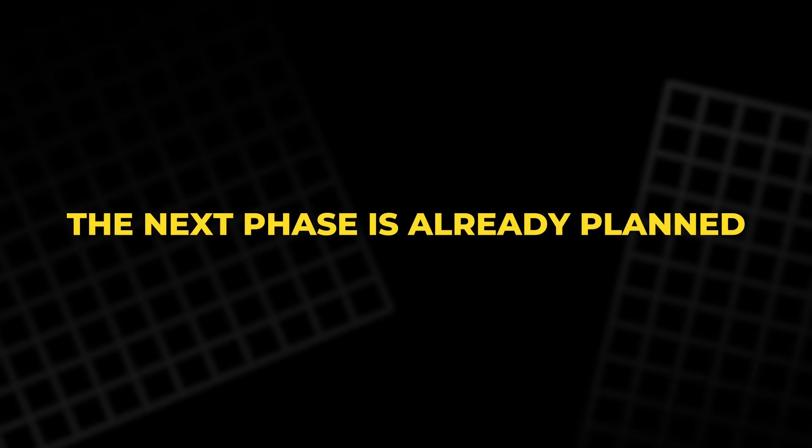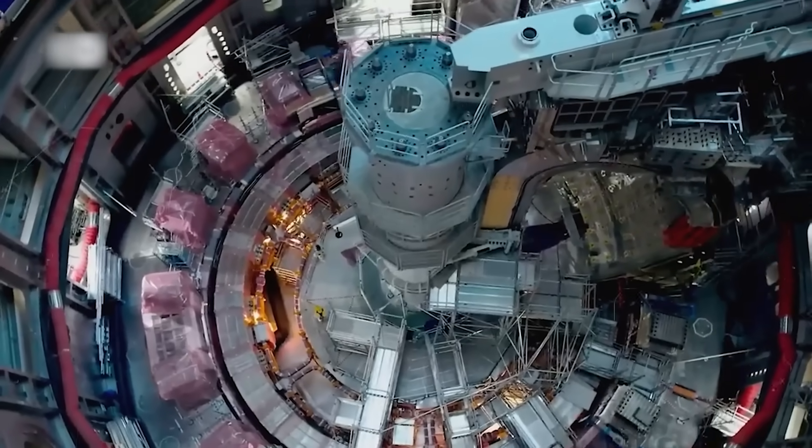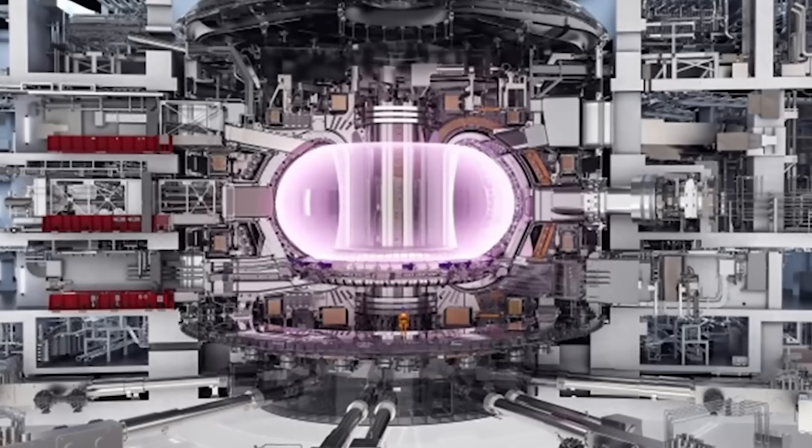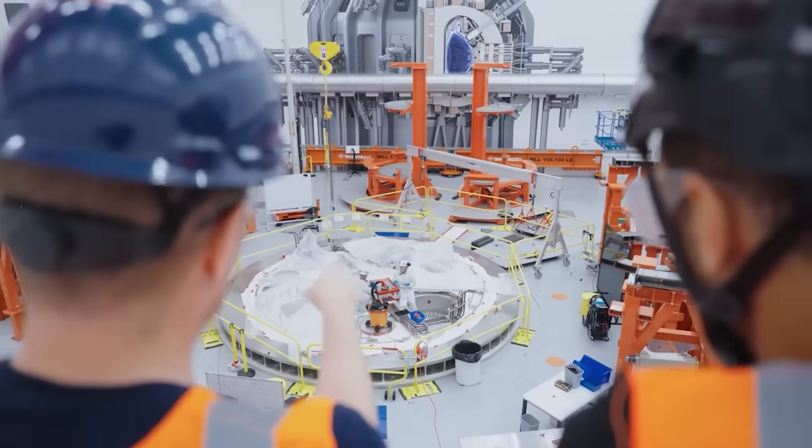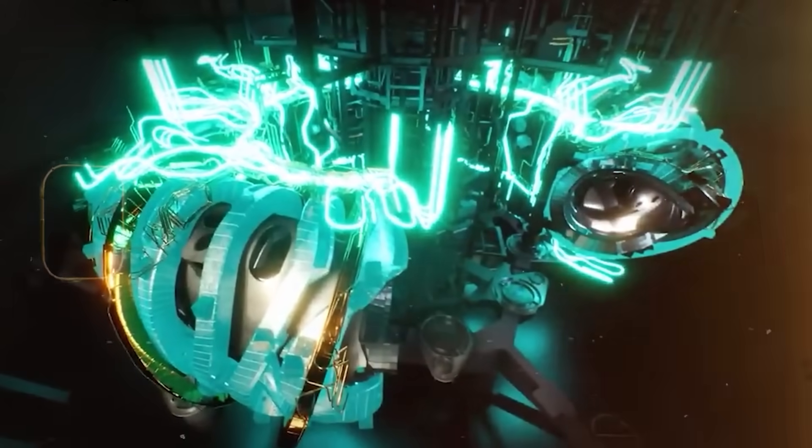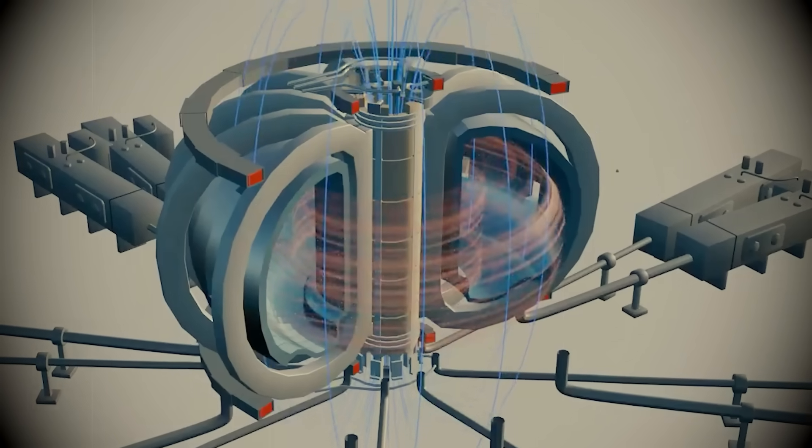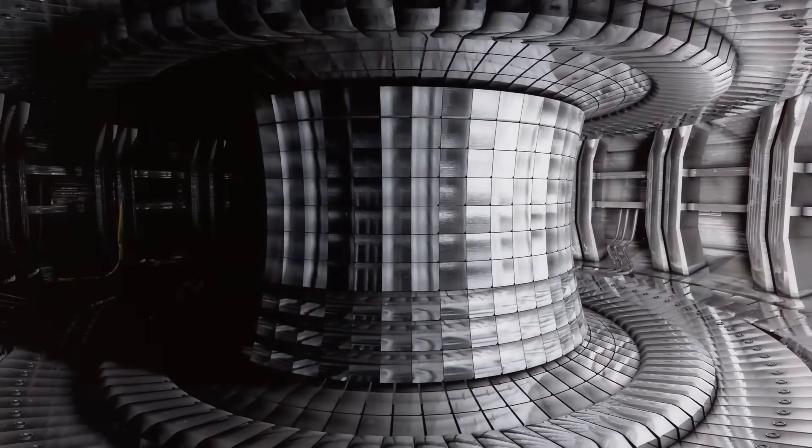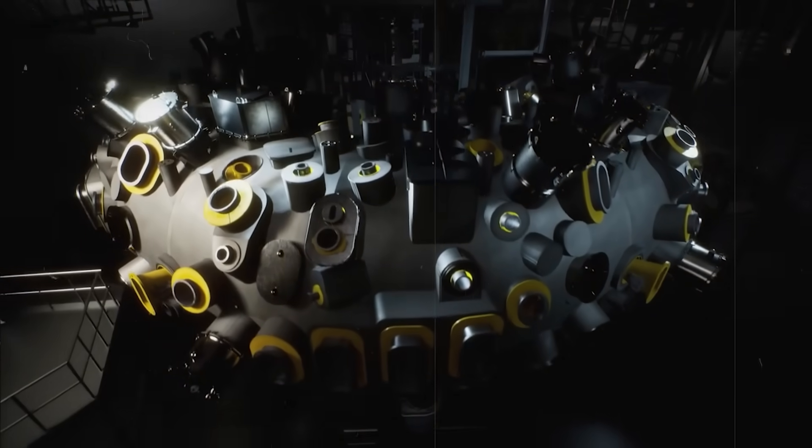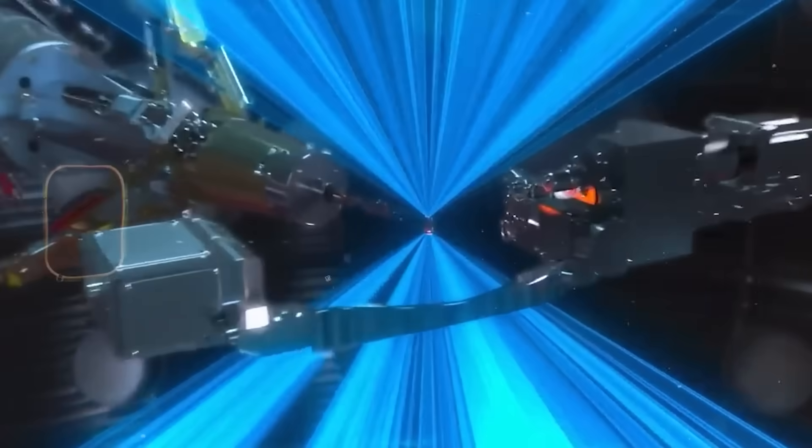The next phase is already planned. Engineers are upgrading the reactor with stronger magnets, more efficient cooling, and advanced materials. By 2027, they aim to sustain plasma for 30 minutes straight. That would be revolutionary, approaching continuous operation. Beyond that lies the next-generation project, codenamed WX. This won't just study plasma. It will generate net power. It's the first real step toward a commercial fusion reactor. The road is still long. Challenges remain with tritium fuel cycles, heat extraction, and material durability. But the momentum is unstoppable. With each success, fusion feels less like a dream and more like destiny.